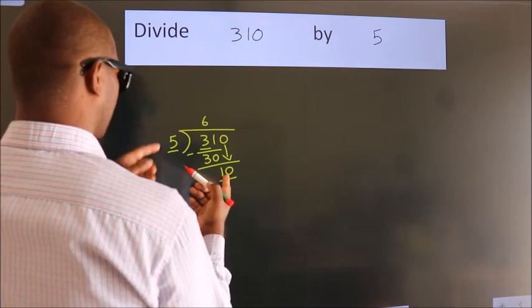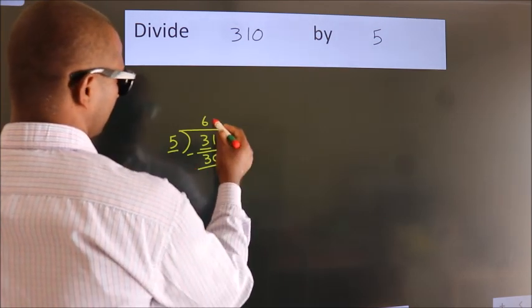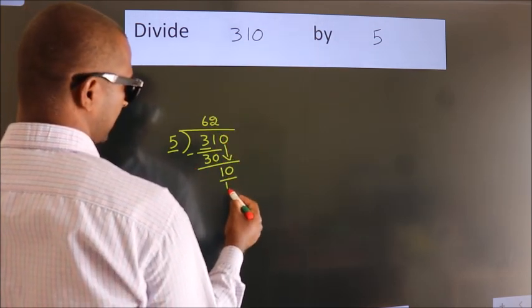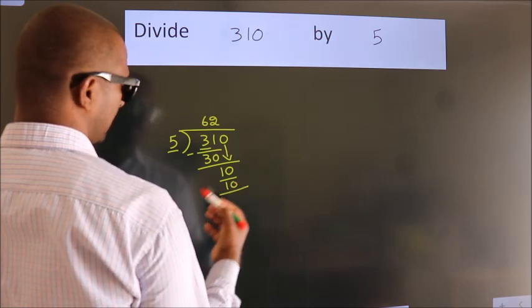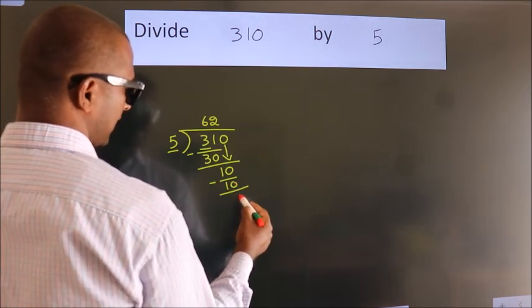When do we get 10 in the 5 table? 5 times 2, 10. Now we subtract. We get 0.